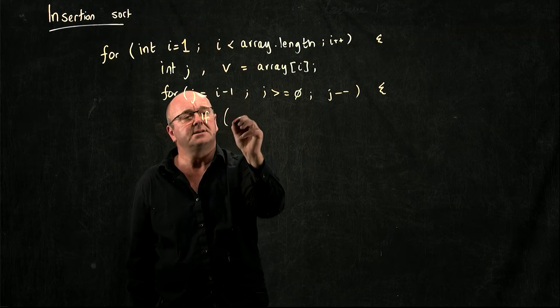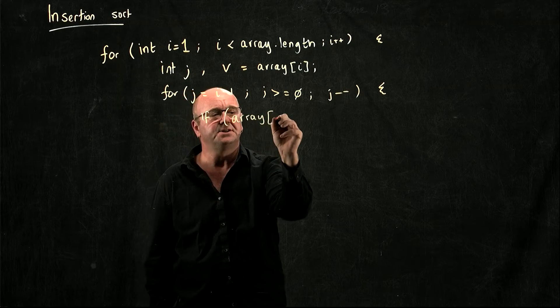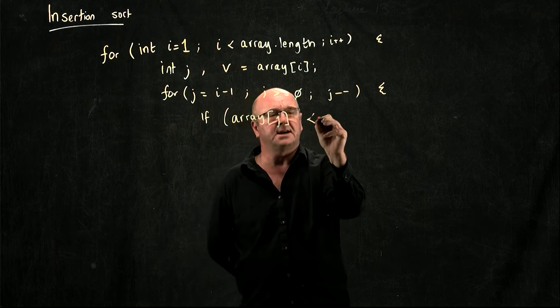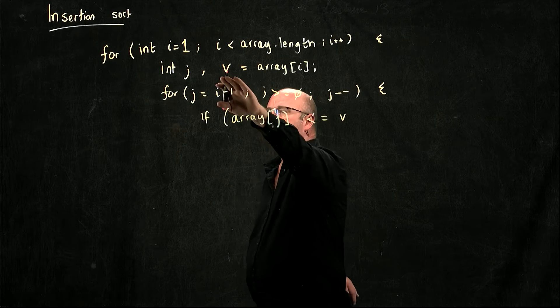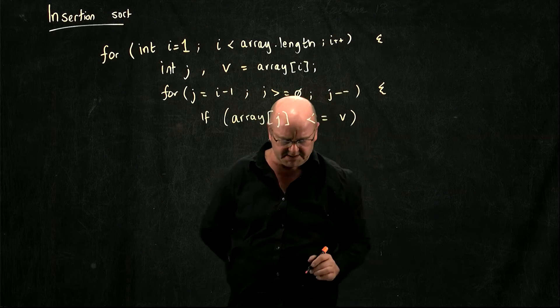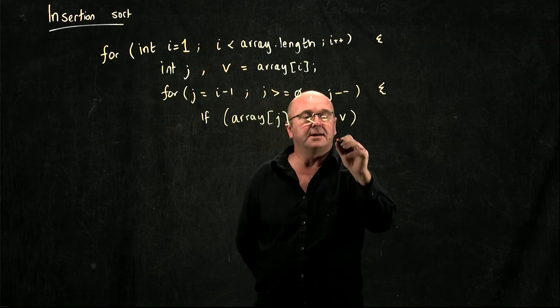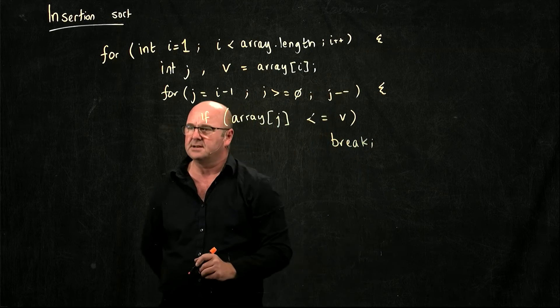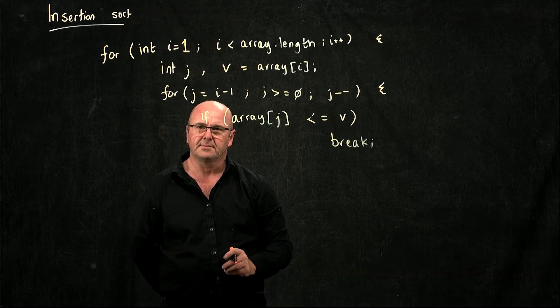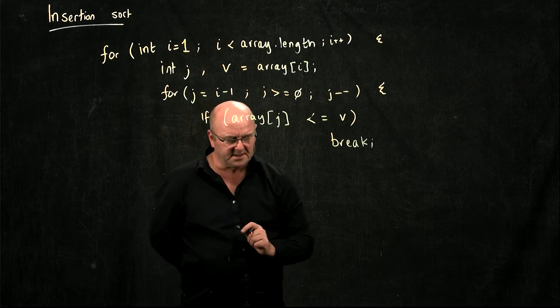If the element at position j is less than or equal to my variable v that I set up here, which is the element at position i, then I'm done and I don't need to carry on going through. I'm done with my sort.